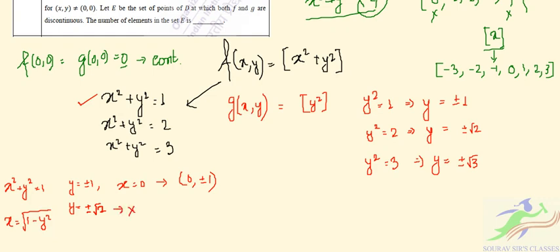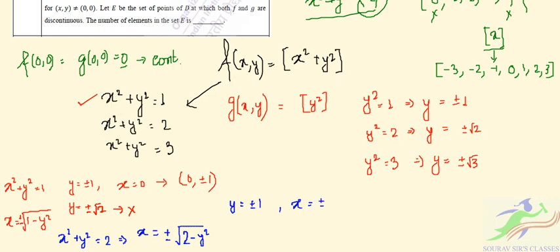On the circle x² + y² = 2: x = ±√(2 − y²). If y = ±1, then x = ±1, giving 4 points: (±1, ±1). If y = ±√2, then x = 0, giving 2 points: (0, ±√2). If y = ±√3, then x² = 2 − 3 < 0, not possible. So 6 valid points come from the circle of radius √2.